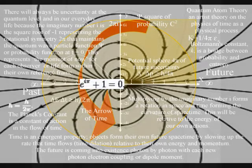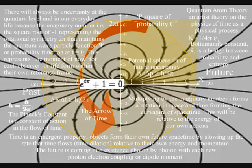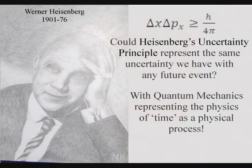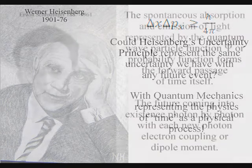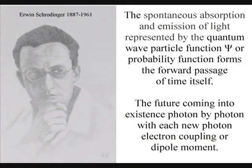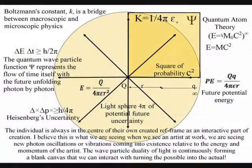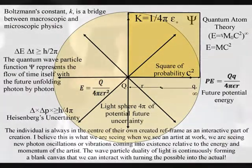At the smallest scale of this process, the future is represented by Heisenberg's uncertainty principle that is formed by the wave function or probability function. This represents the same uncertainty we have with any future event that we can interact with, turning the possible into the actual.